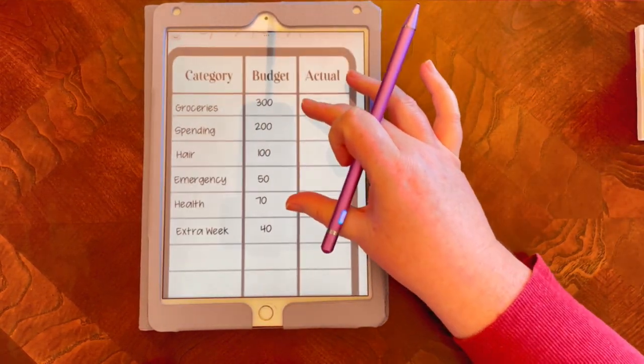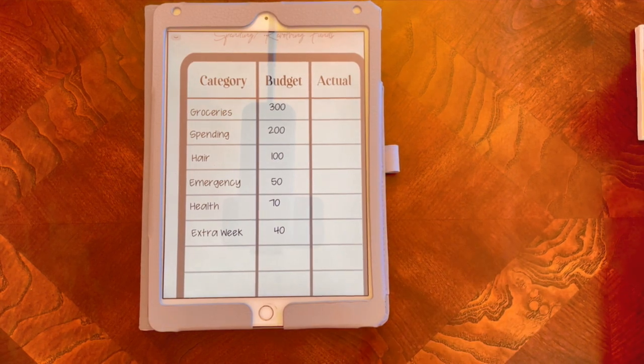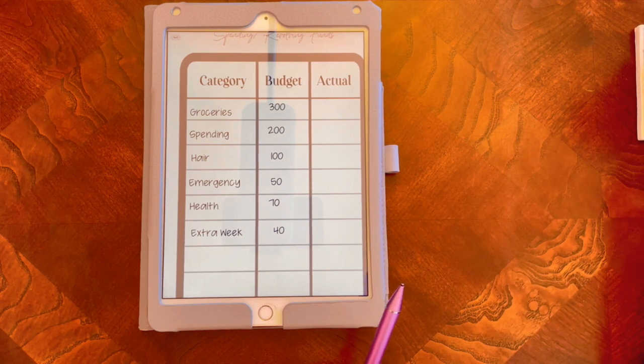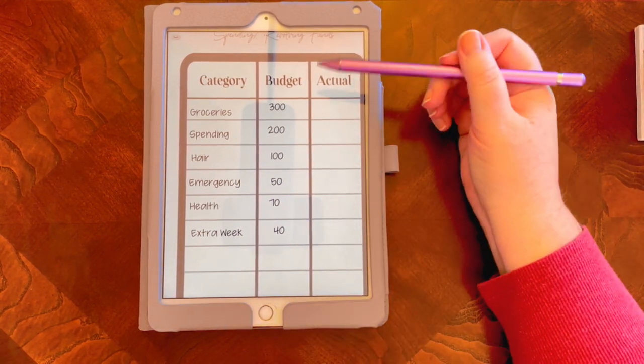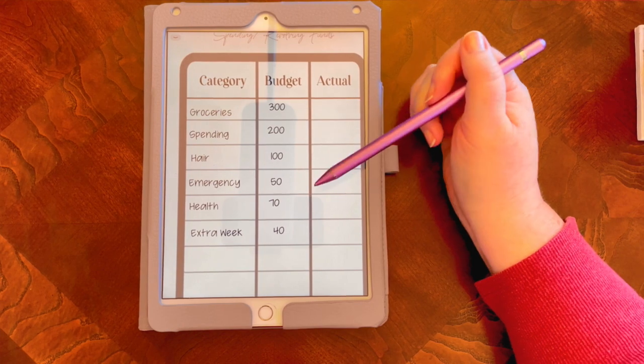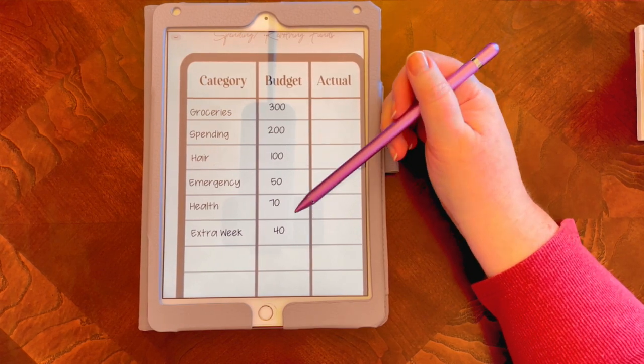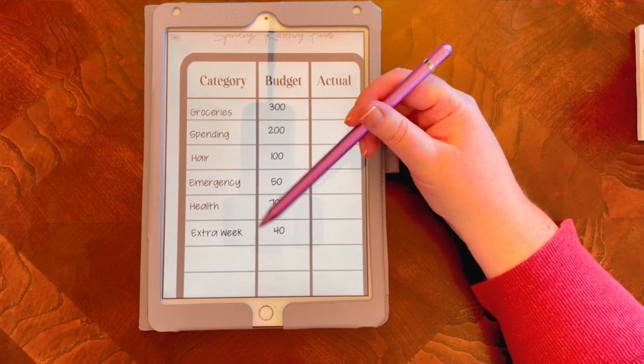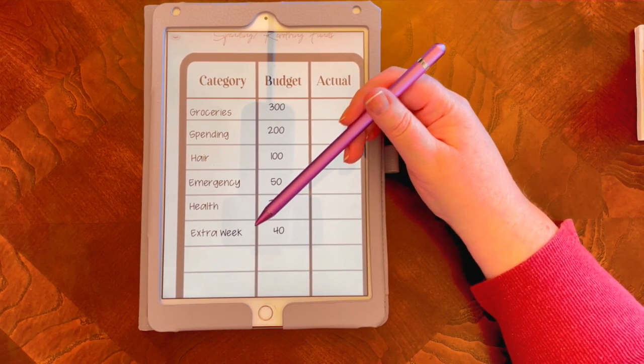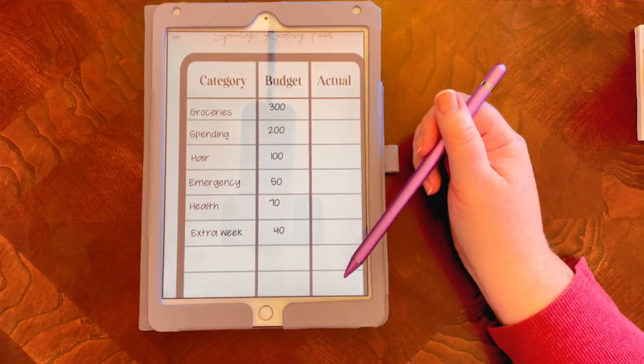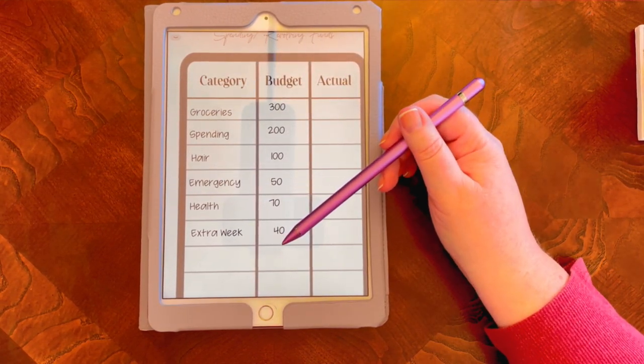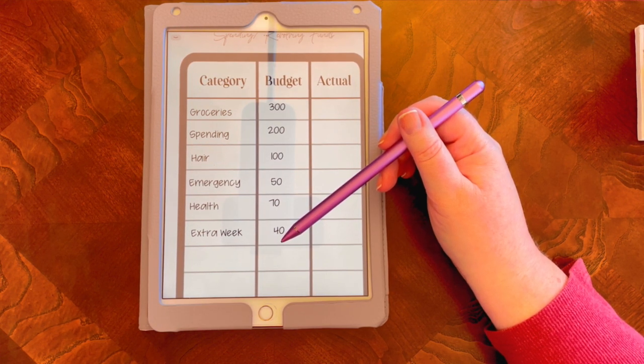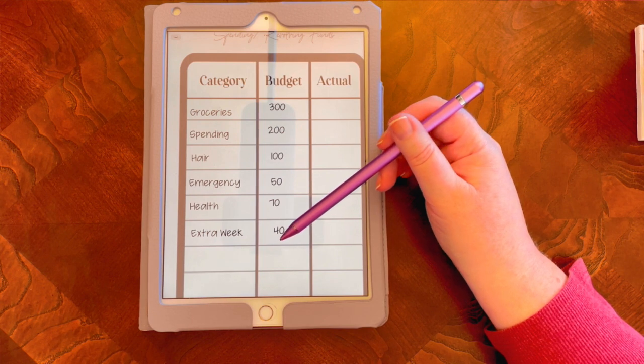So moving on to my second sheet. I have my normal $300 in groceries, $200 in spending, $100 for hair, $50 for emergency, $70 for health. And I decided that I wanted to move extra week to this section so that it always got the same amount every single paycheck. Because I just want to make sure that I have those fully covered. And I don't have to worry about that.